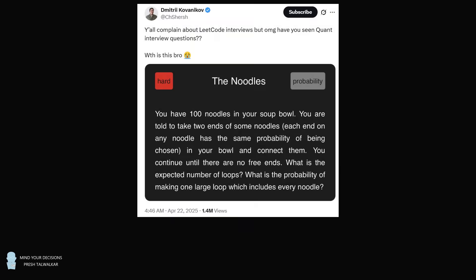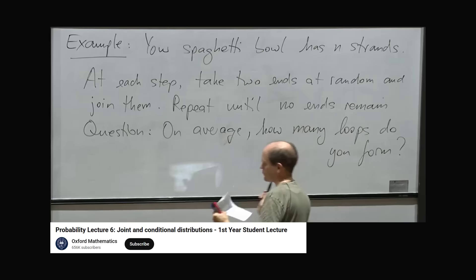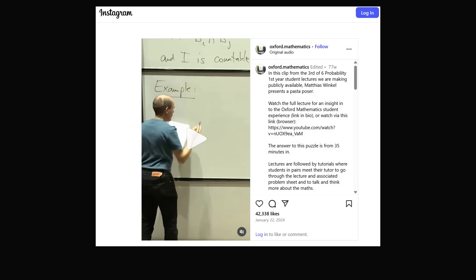Hey, this is Presh Talwalkar. While browsing social media recently, I was pleasantly surprised to see an investment bank interview question go viral. This is a quantitative interview question about probability that has over 1.4 million views on X. Oxford Mathematics covered a very similar problem on its YouTube channel, and their short-form video about the problem has over 2.2 million views. When I see a problem like this go viral on two very big platforms, it's a social signal to me that it's an interesting problem.